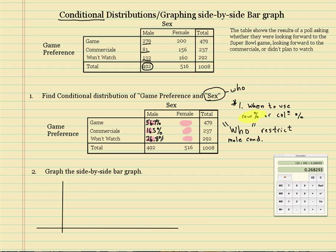132 divided by 492 is 26.8%. All of these should add to 100%, or if you do them in decimals, it'll be 1. So that's the conditional for the males. This is going to be very important on how to interpret these when we talk about independence in the next video.